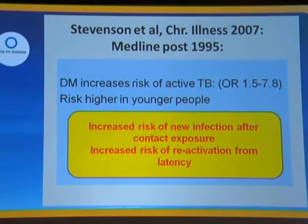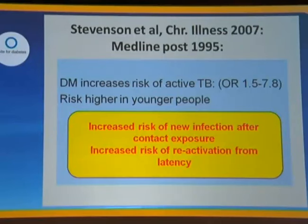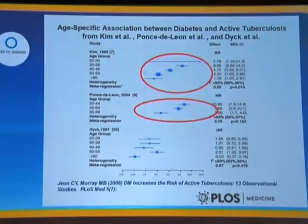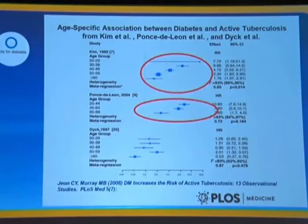In addition to that, the odds ratio risk is higher in younger people, with increased risk of new infection after contact exposure and increased risk of reactivation from latency. The age-related association shows that the odds ratio increases with decades of age, up to a relative risk of close to 10 for those under 40 and under 30. So there's a tight negative correlation with age — which is quite interesting.